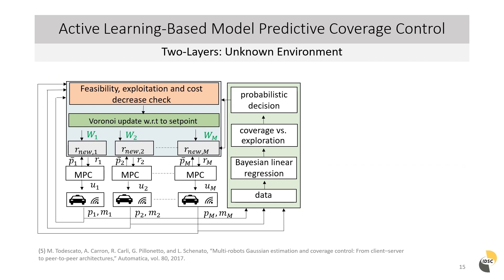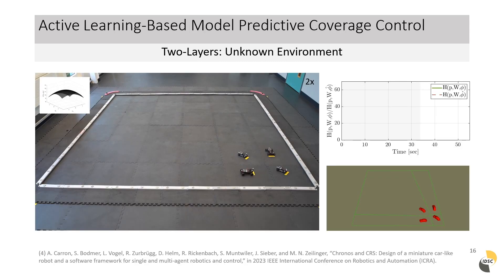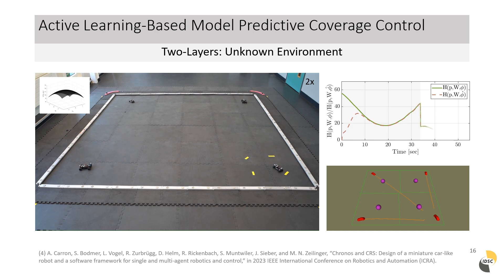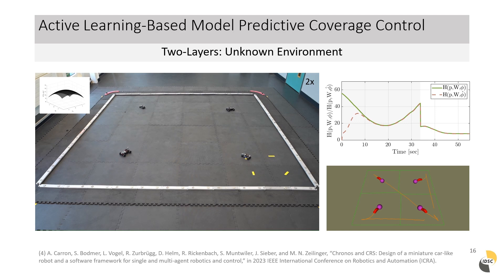For its extension to an unknown environment, a probabilistic decision based on the remaining uncertainty is made on whether the cars are exploring and collecting data or covering. In case of an exploration decision, the cars are steered to the most uncertain point of their respective partition. In the resulting movement on hardware, it can be seen that the cars initially perform an exploration movement and drive to the point of maximal variance within their partition. In addition to the actual locational optimization cost development, its estimated value is shown in dashed rosé. As our agents get close enough to the point of maximal uncertainty, they re-decide on the next move and for the remainder of the experiment they perform covering movements.